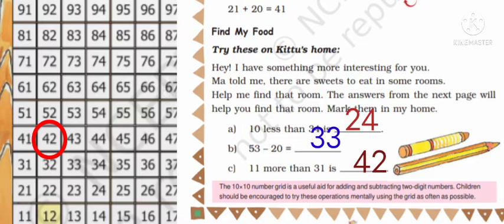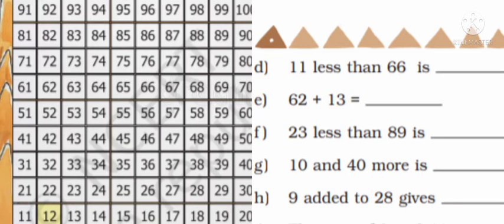So 11 more than 31 is 42. Next, 11 less than 66, that is you have to subtract 11 from 66. 66 minus 11. You have to come down, that is from 66 when you come down you will come to 56, then again you have to go backward, that is minus 1, 55.